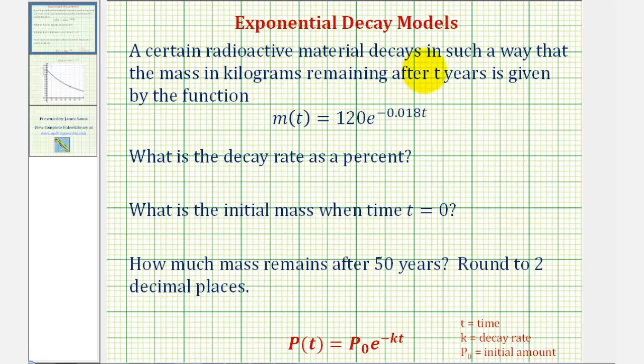A certain radioactive material decays in such a way that the mass in kilograms remaining after t years is given by the function m(t) equals 120 times e raised to the power of negative 0.018 times t.